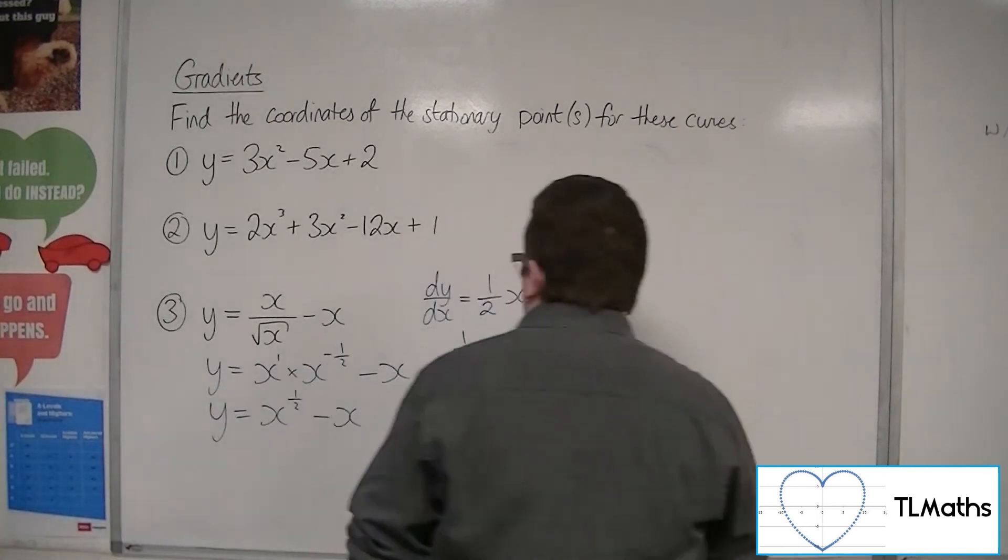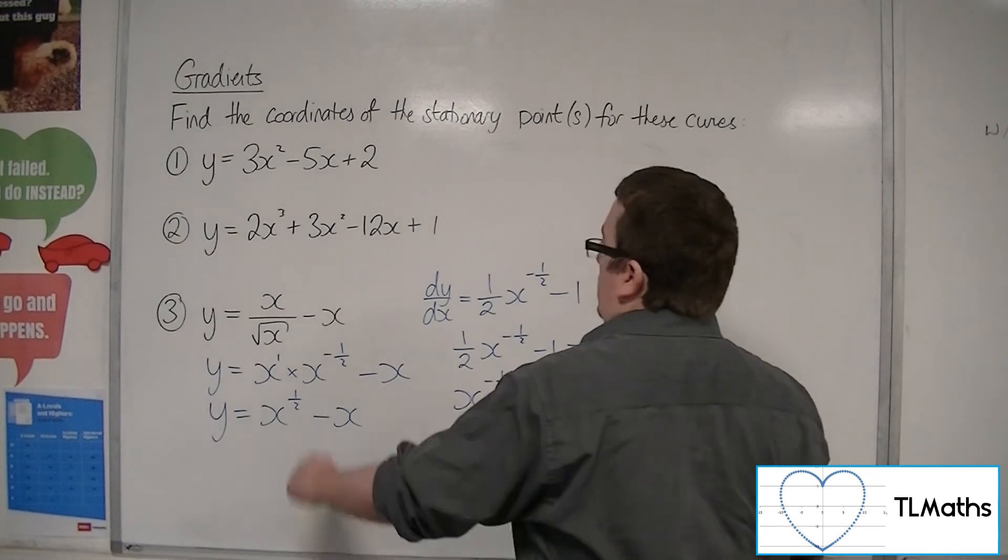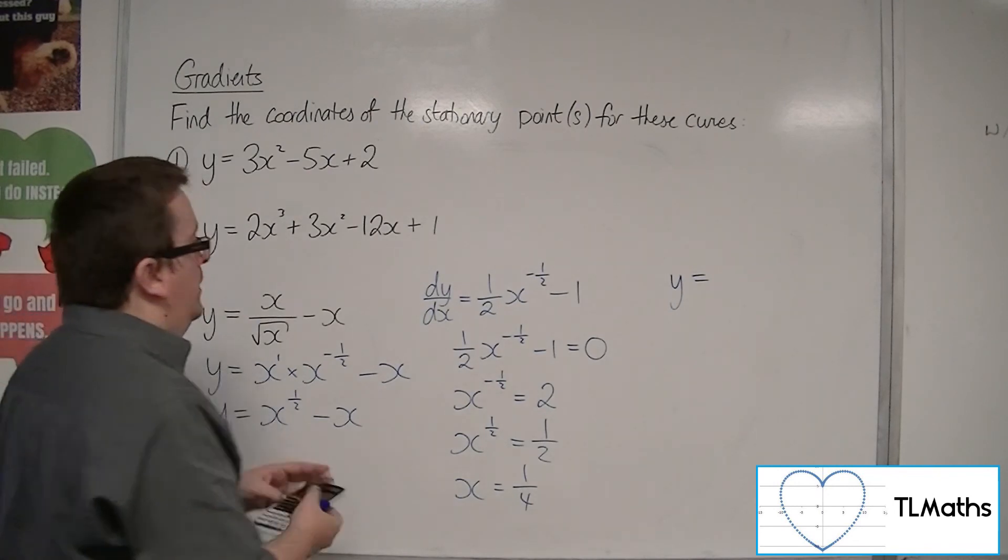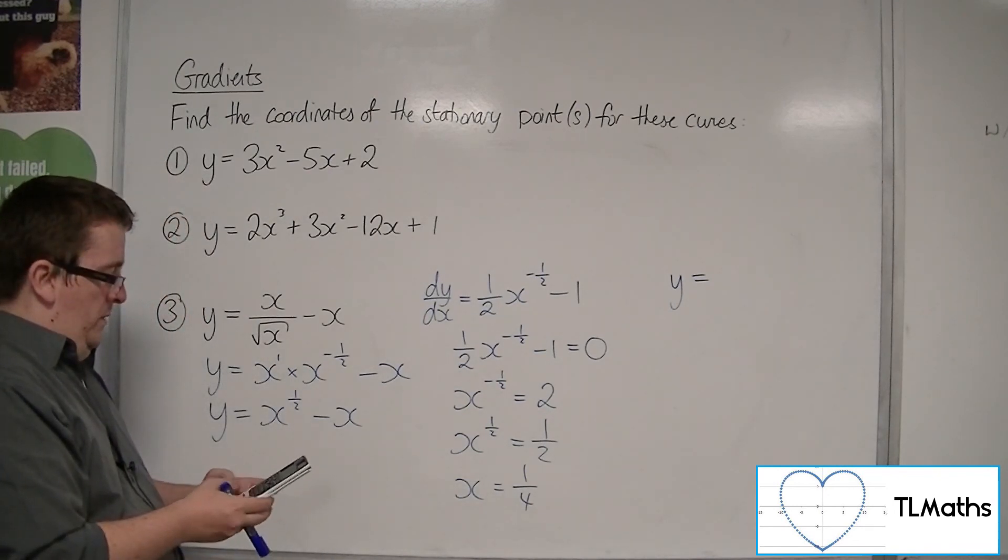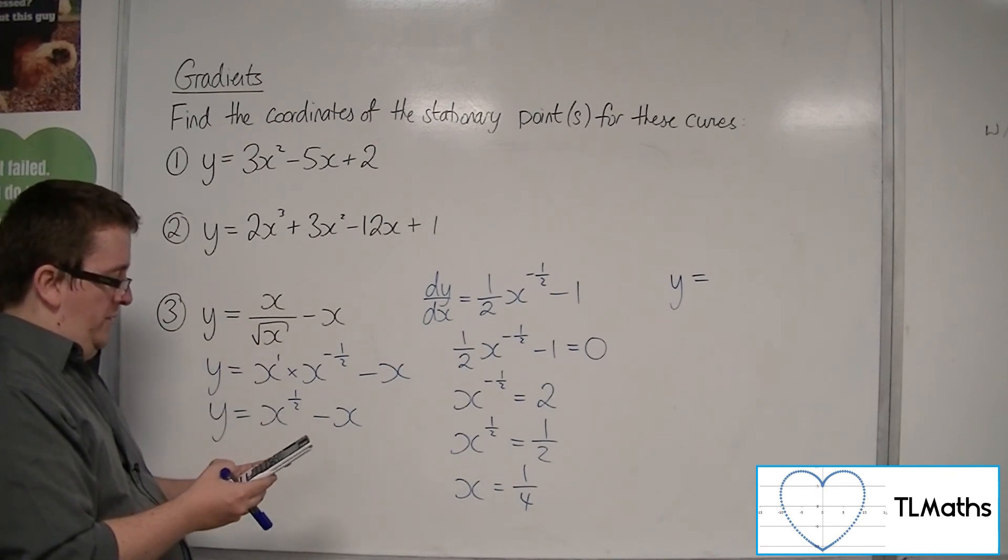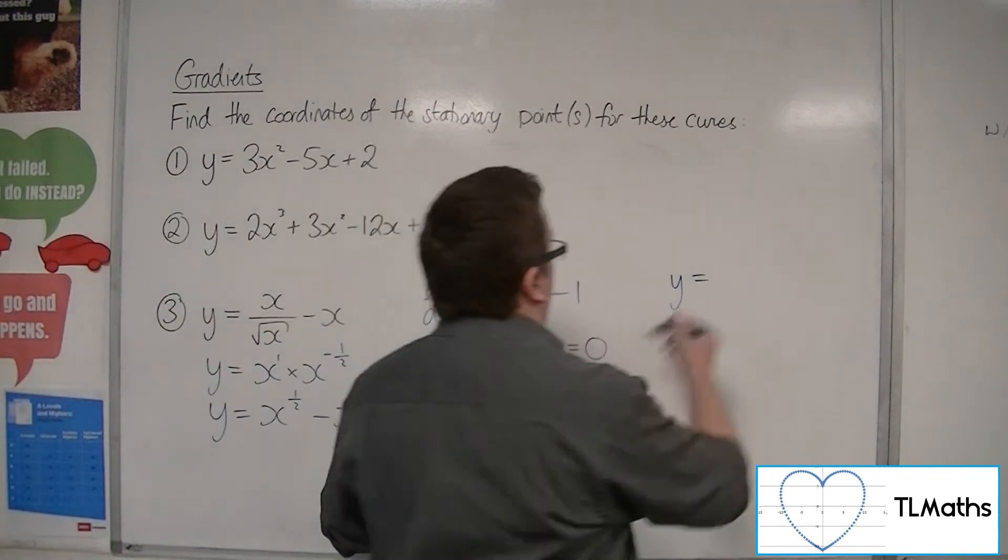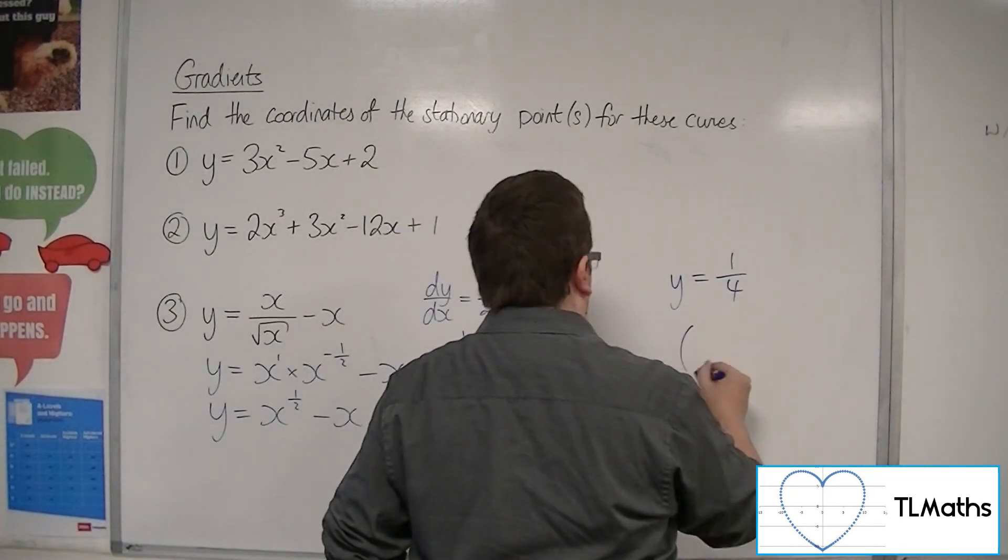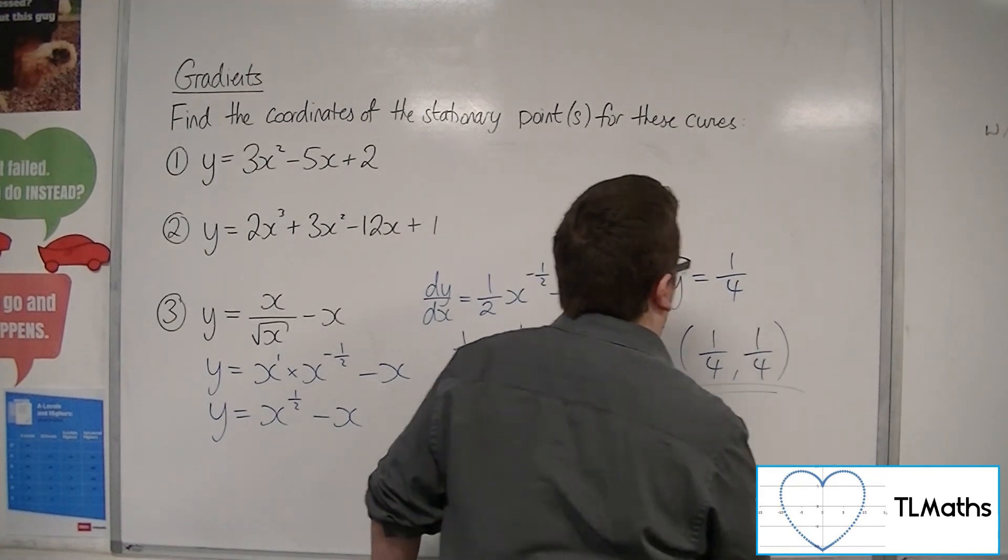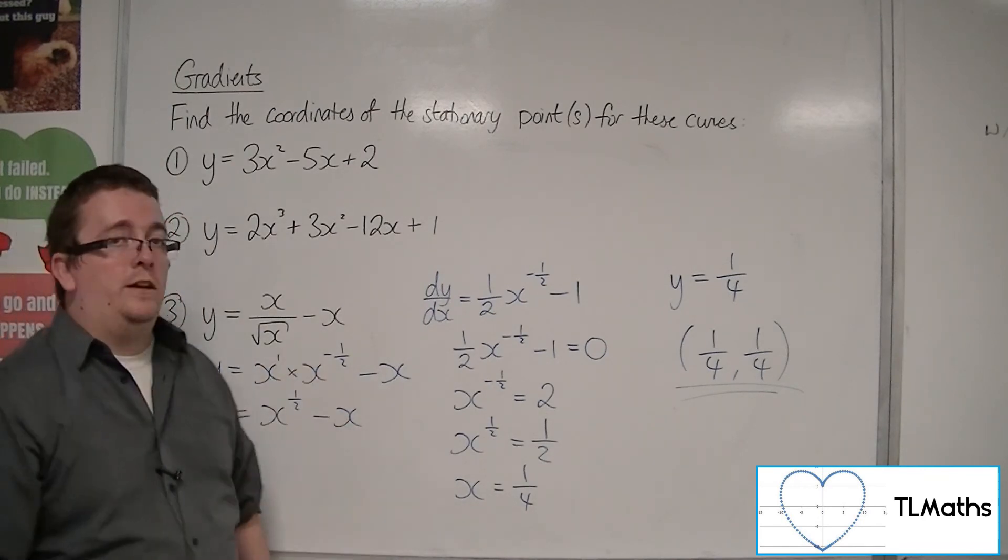Then I can substitute that into the original curve. We've got 1 over 4 divided by the square root of 1 over 4, and take away 1 over 4, which gets us 1 over 4, believe it or not. So 1 quarter, 1 quarter, that's the coordinates of the stationary point for that curve.